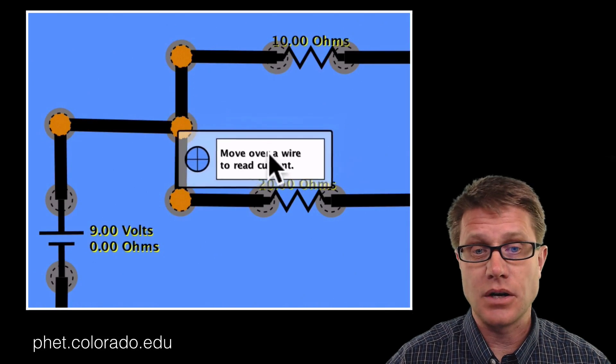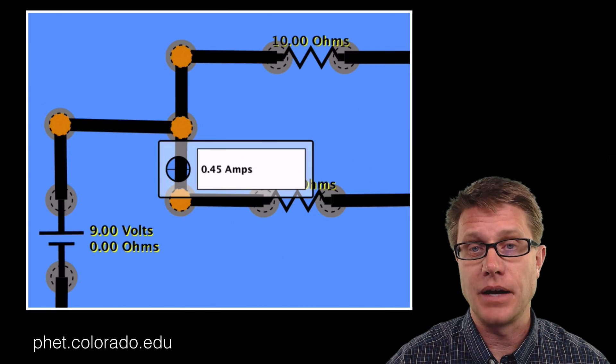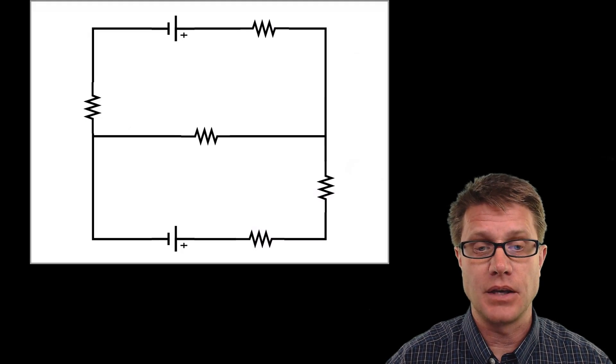Well it is simply Kirchhoff's junction rule. It is going to be 0.45 amps. The sum coming in has to equal the sum that is coming out.